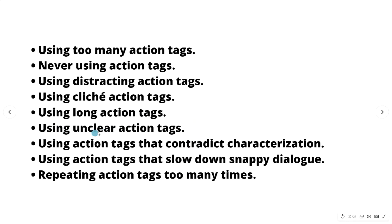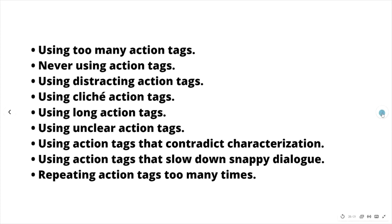Try to use action tags that match the pace you want for the dialogue. Some dialogue is snappier — more ping-pong back and forth — and in that case, limit the amount of action tags and keep them very short, like two to three words at most, like 'he blinked' or 'she shrugged.' Also try not to repeat the same action tags too many times in the same story, as it can be distracting, repetitive, and lower the reader's experience.